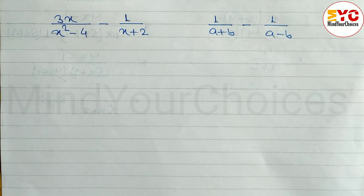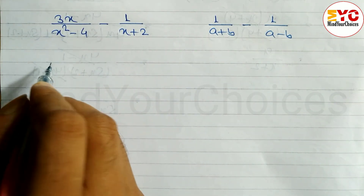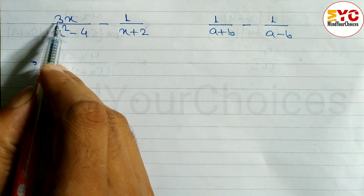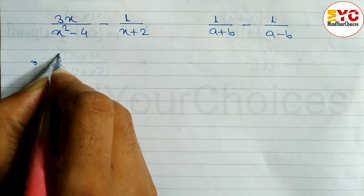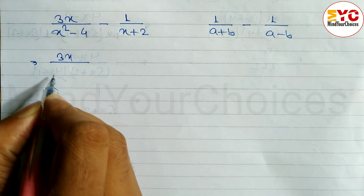In this video we will learn how to simplify. We have two questions, so let's get started. You can see 3x divided by x squared minus 4.